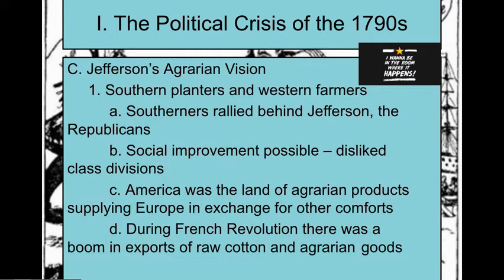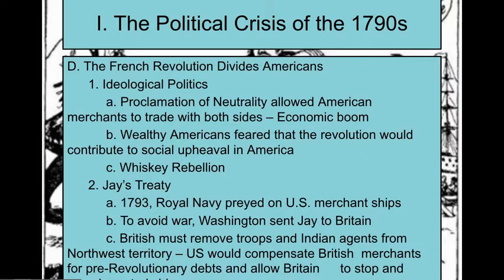Jefferson's agrarian vision — he's all about states' rights, farming, western expansion. He's going to be big on agrarian products and improvements for agrarian societies. He's also pro-French Revolution. He lived in France for three years, helped write the Declaration of Rights there, and believed what they were doing was a good thing. It was also going to boost Southern agrarian exports.